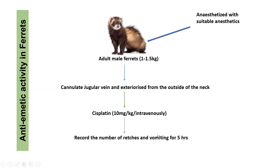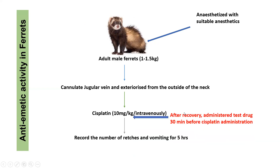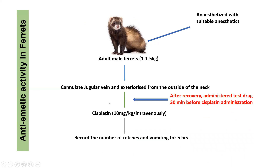This group is considered the disease group or control group. In the treatment group, the same process is carried out — the ferret is anesthetized, the surgical process is done, and once recovered, the test drug is administered. Then cisplatin is administered and the same experiment is repeated. The duration of time for which the inhibitory effect remains significantly different from the vehicle control is recorded, giving you the anti-emetic activity of the test drug.